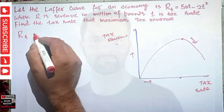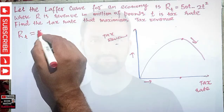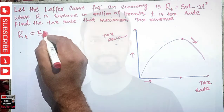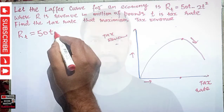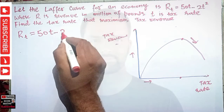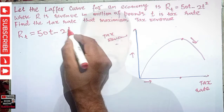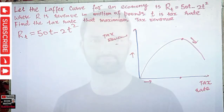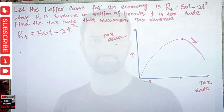The government revenue R is a function of the tax rate t. So R(t) = 50t - 2t² is our tax revenue function. Now the tax rate that maximizes the tax revenue is what we have to find.